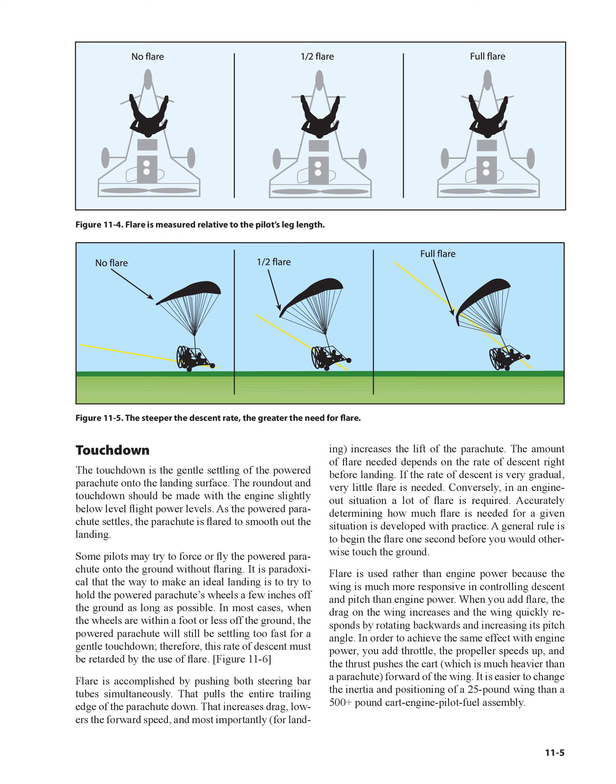A general rule is to begin the flare one second before you would otherwise touch the ground. Flare is used rather than engine power because the wing is much more responsive in controlling descent and pitch than engine power. When you add flare, the drag on the wing increases and the wing quickly responds by rotating backward and increasing its pitch angle. In order to achieve the same effect with engine power, you add throttle, the propeller speeds up, and the thrust pushes the cart forward of the wing. It is easier to change the inertia and positioning of a 25-pound wing than a 500-plus-pound cart/engine/pilot/fuel assembly.